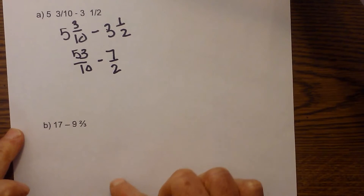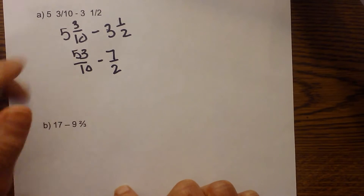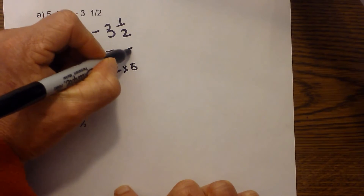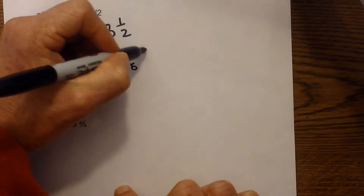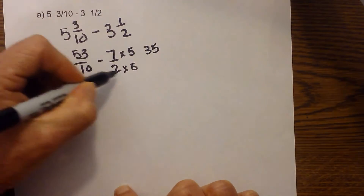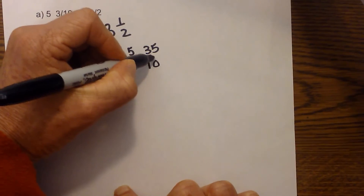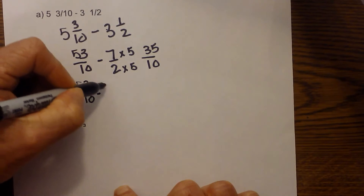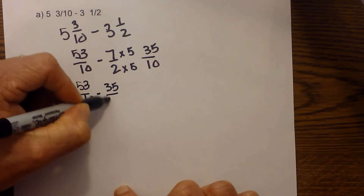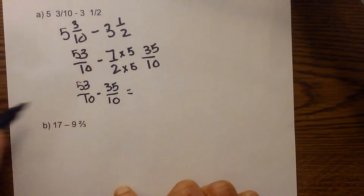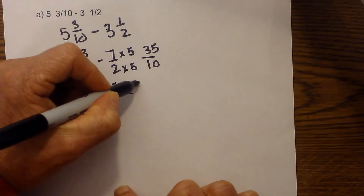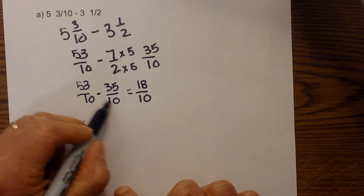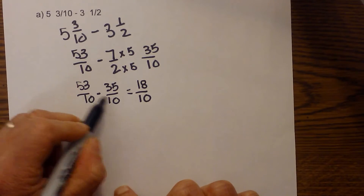We need a common denominator, and ten is the common denominator. So multiply seven-halves by five: seven times five is thirty-five and two times five is ten, giving thirty-five tenths. Rewriting: fifty-three tenths minus thirty-five tenths. Now we just subtract — fifty-three minus thirty-five is eighteen over ten. Since the denominators are the same, we do not subtract them.